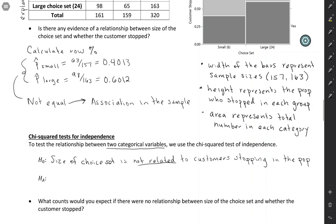The alternative is that the size of the choice set is related to customers stopping, and again, in the population. And this is generally always done as a two-sided test. Chi-squared tests are two-sided. So we're not saying right now whether it's making it better or worse, whether it's making more customers stop or fewer. We're just saying, is there a relationship between the two?